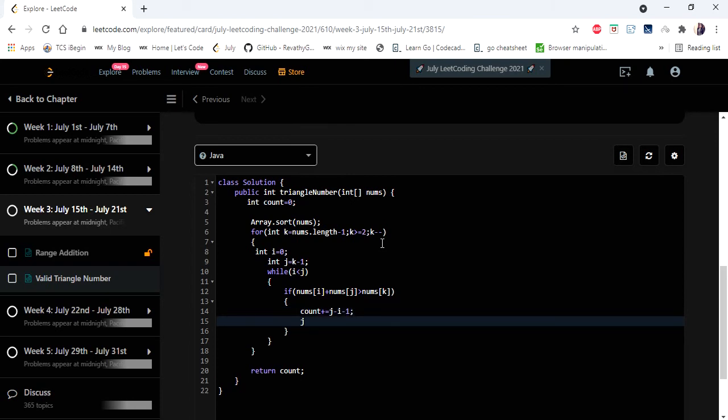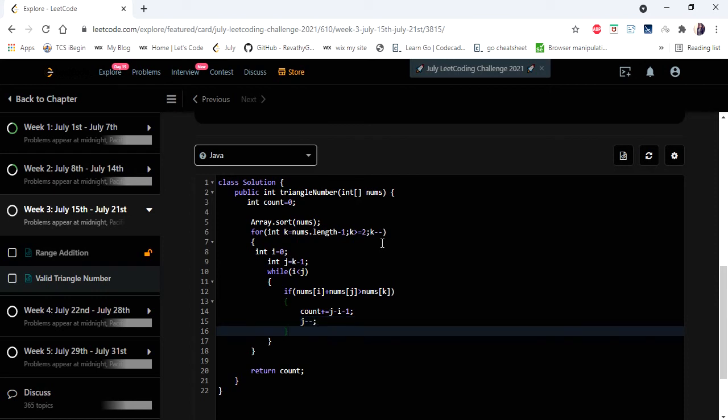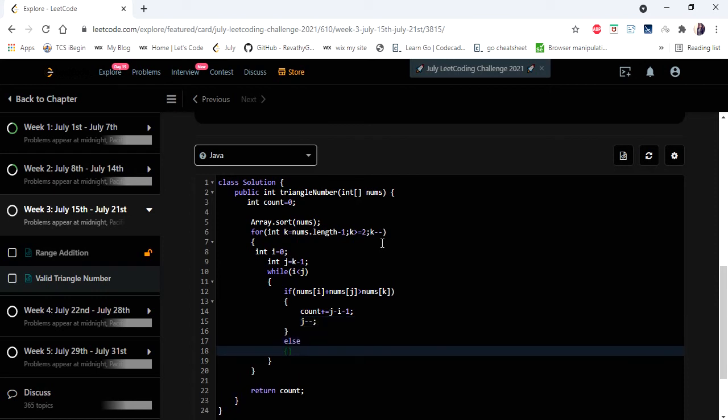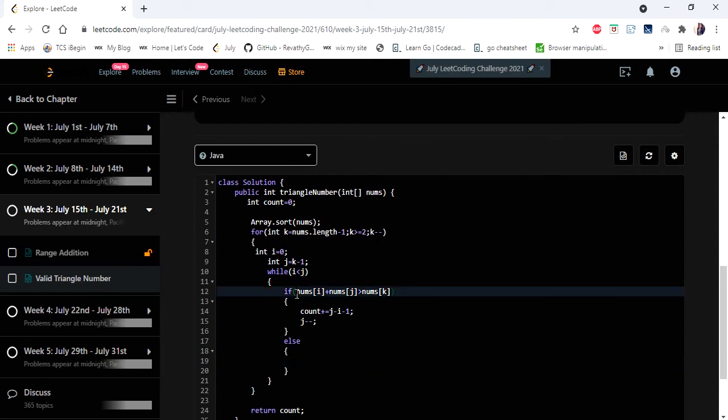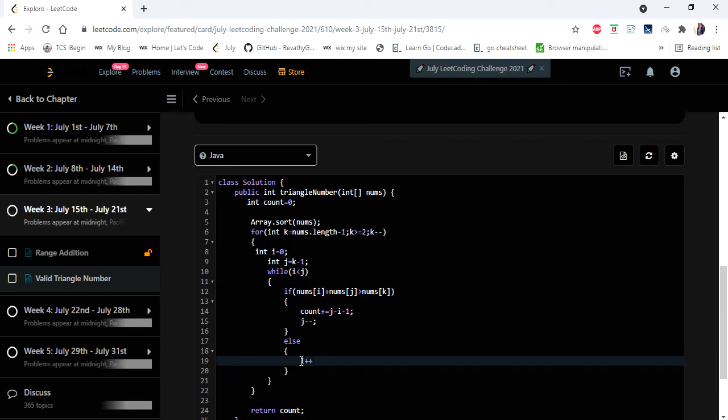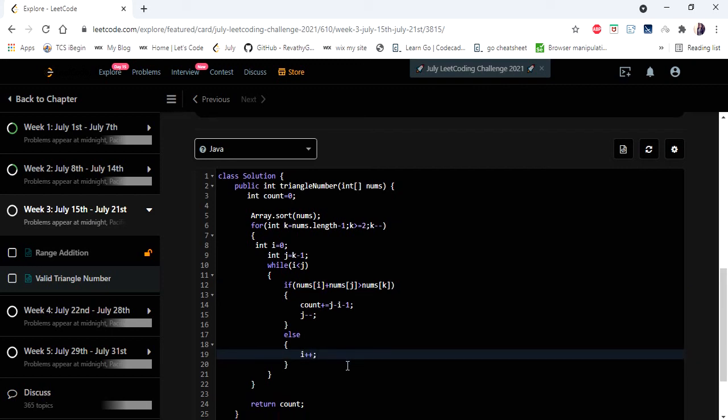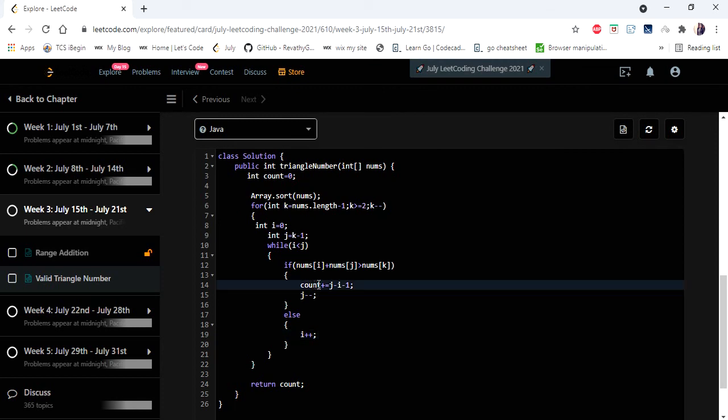And once we find the count by fixing j at that point, we are going to decrement j. If not, if this condition is not satisfied, which means the value is less than n of k, in that case we have to pull our pointer towards the higher value. So since i is at the lower value, we are going to move our i next to the higher value. So once this loop completes, our count will be updated with all possible triplets that form a triangle.